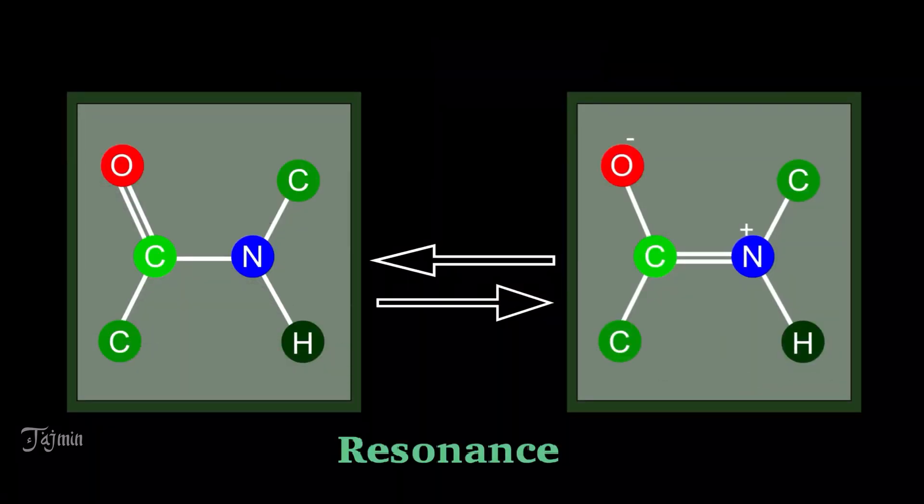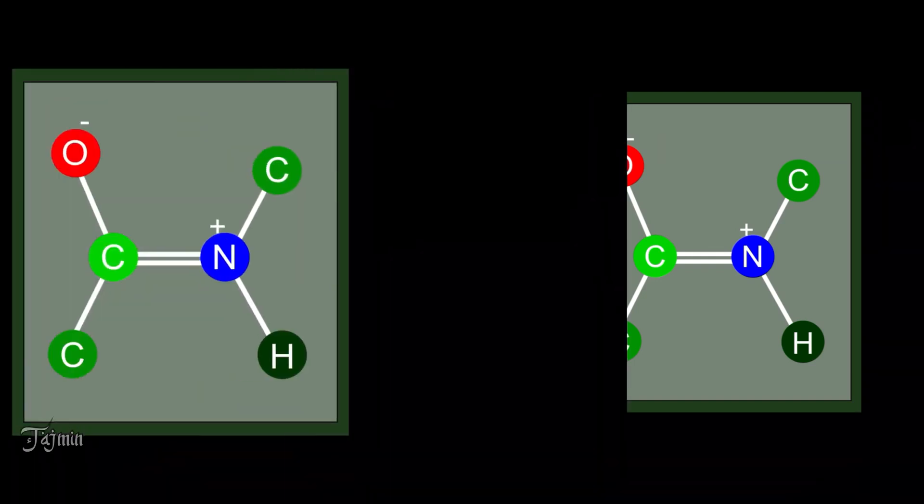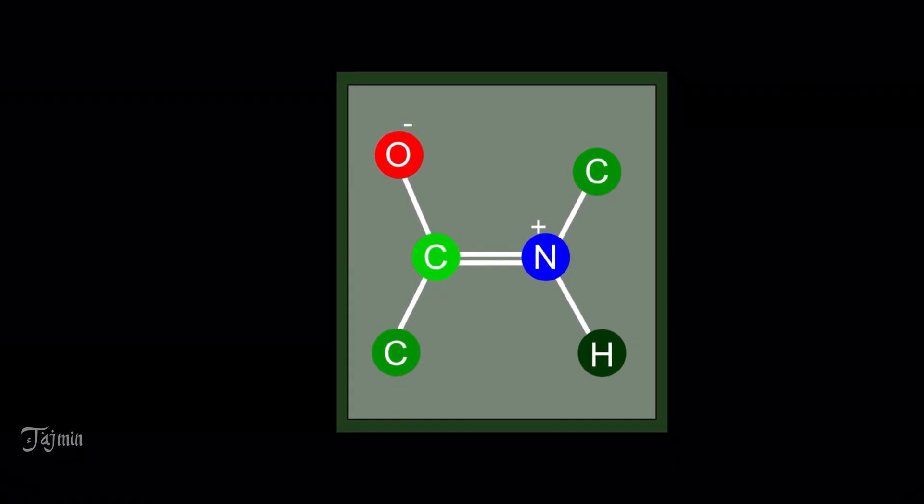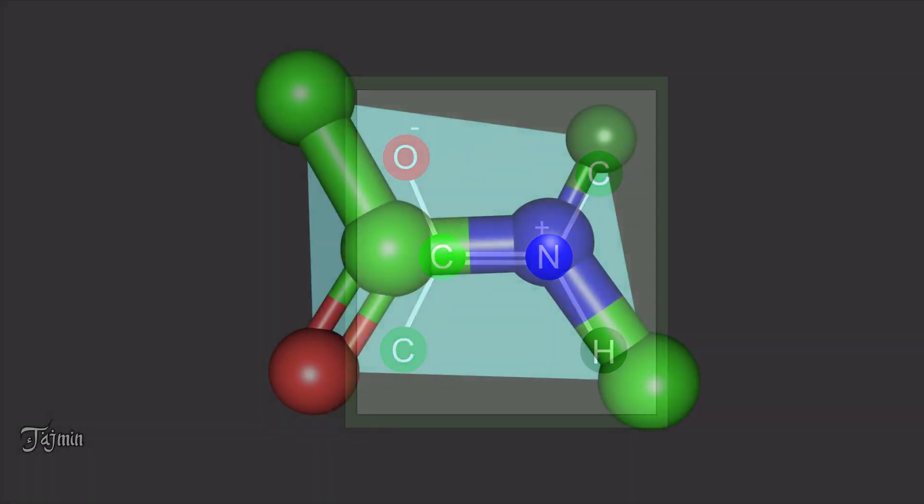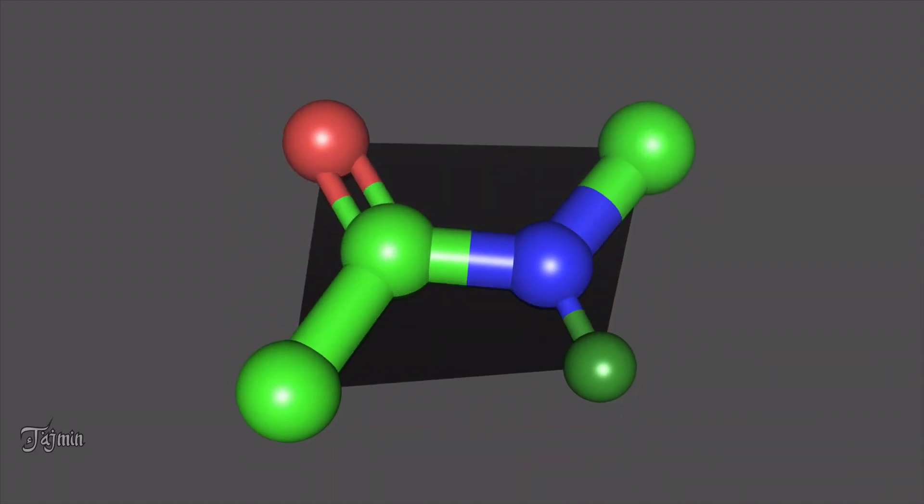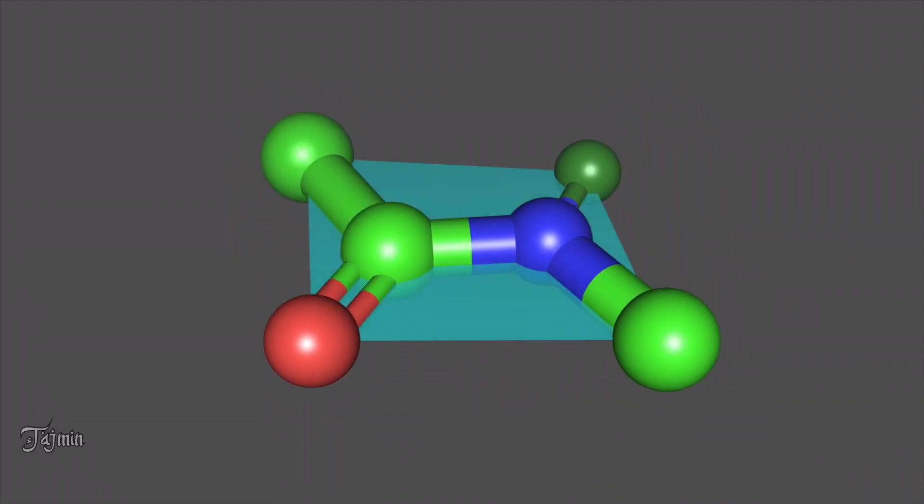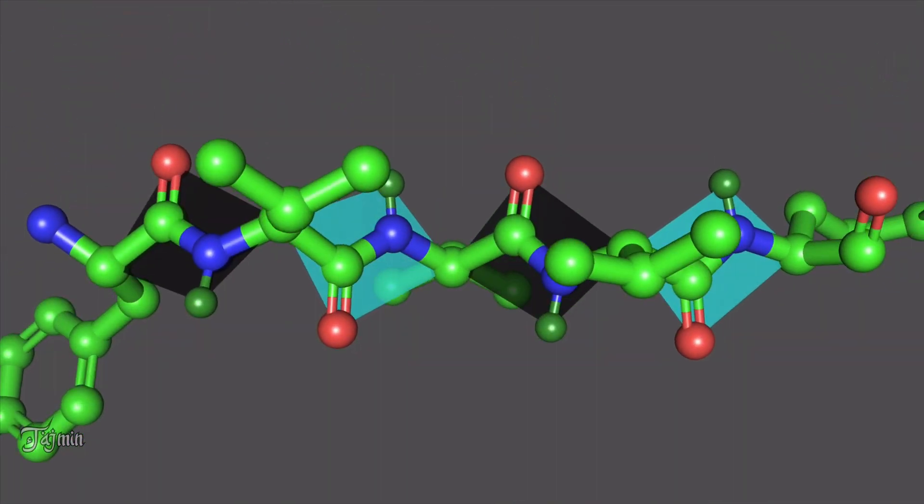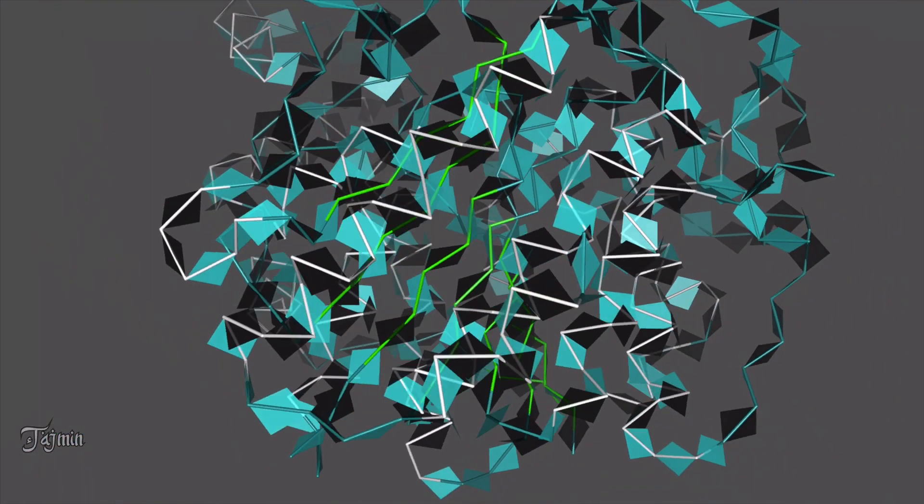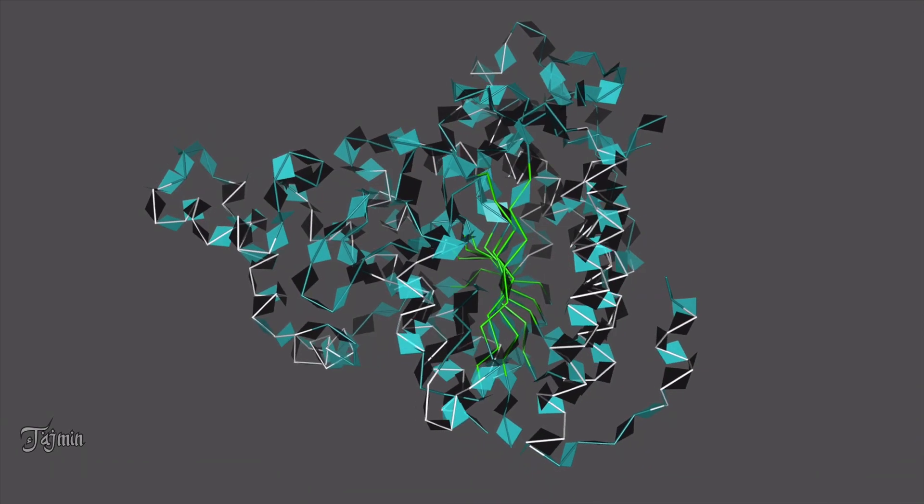These two different forms interchange depending upon the environment. The double bond character makes the peptide bond rigid and planar. The peptide bond and two adjacent C alpha carbon atoms are arranged in a single plane which is called as peptide plane. This peptide plane is the basic repeating unit of a polypeptide chain.